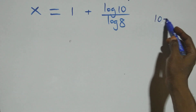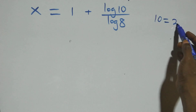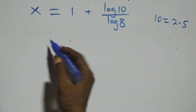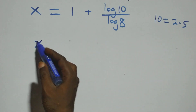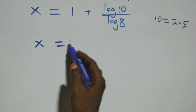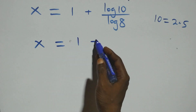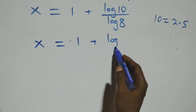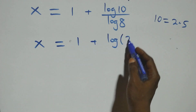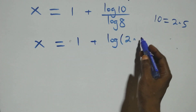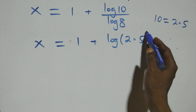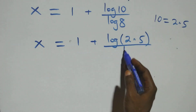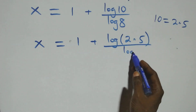We can express 10 as 2 times 5. And what we have here becomes X equals to 1 plus log of 2 times 5, over log 8.